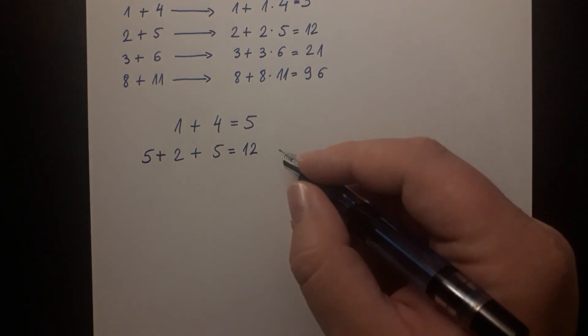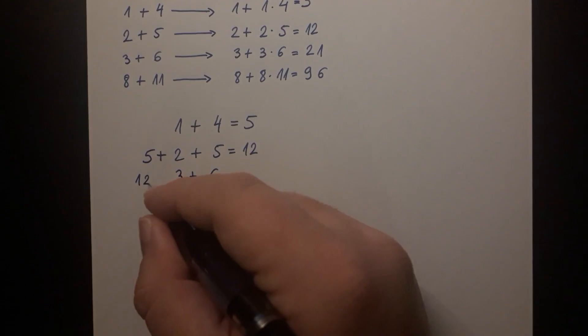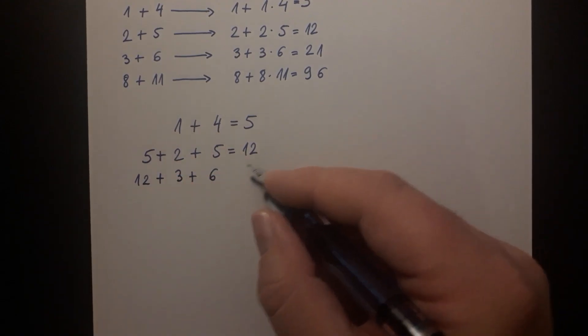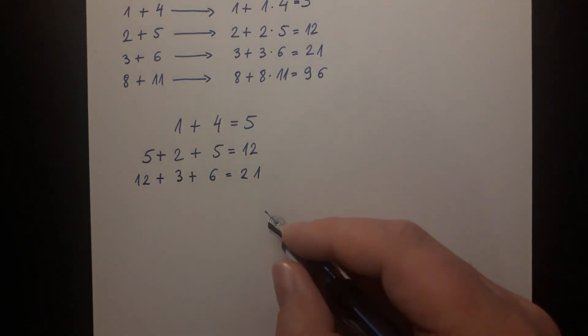As you can see this matches what is given in the original problem. In the third line we are going to add 12 to 3 plus 6 which we originally have. 12 is the answer of the previous line and that is going to give us the sum of 21. This interpretation is consistent with the information that we are given.